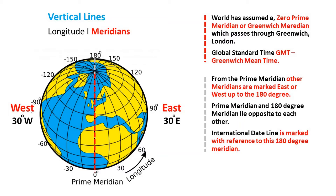For example, for 30 degrees longitude: if it is to the east, we say 30 degrees east; if it is to the west, we say 30 degrees west. From the prime meridian, other meridians are marked east or west up to 180 degrees, and the prime meridian and the 180 degree meridian lie opposite to each other.